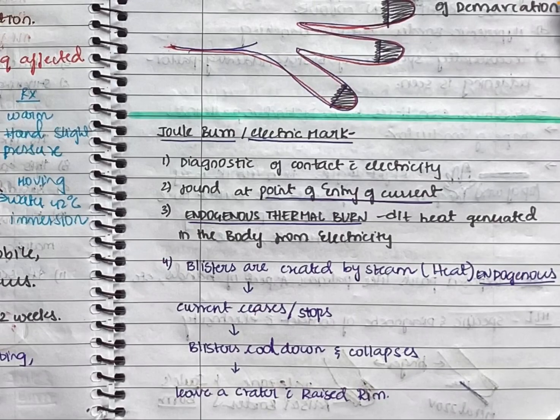Joule burn, or electric mark, is a diagnostic indicator of contact with electricity. It is found at the point of entry of current and is an endogenous thermal burn. This means that because of external electricity, heat is generated inside the body — and this internally generated heat from external electricity is what causes the endogenous thermal burn.